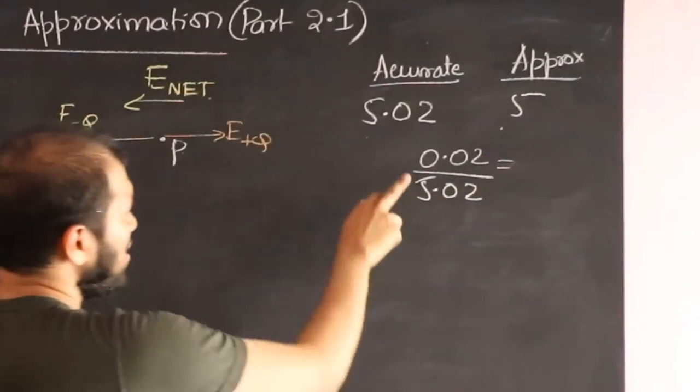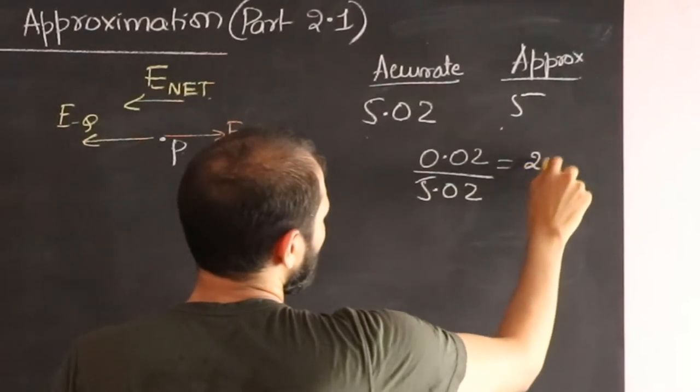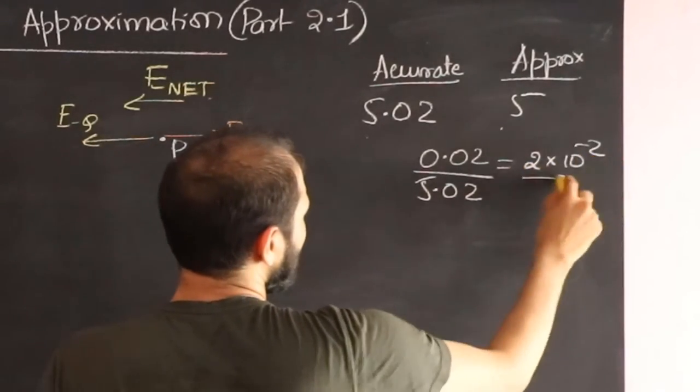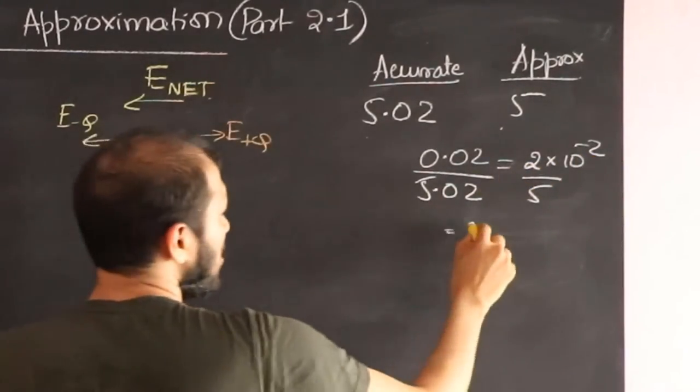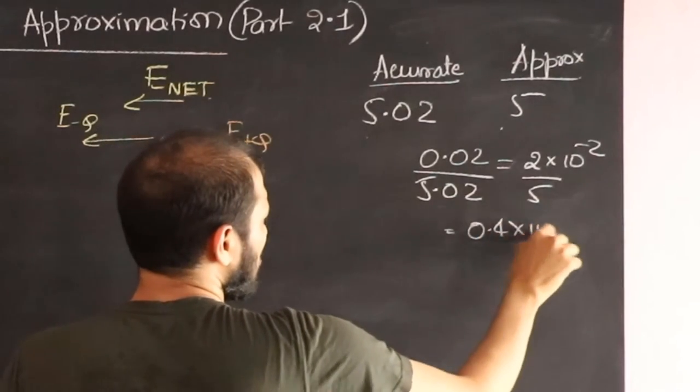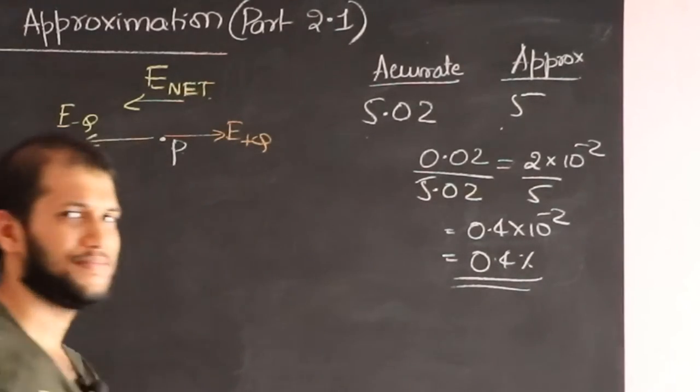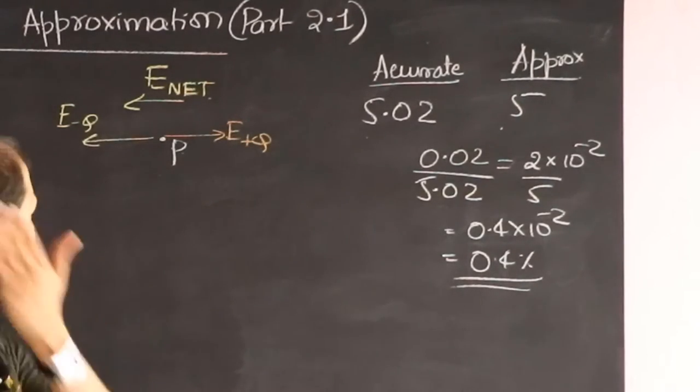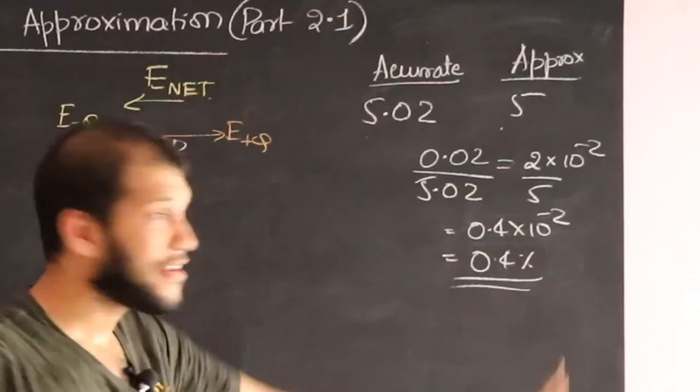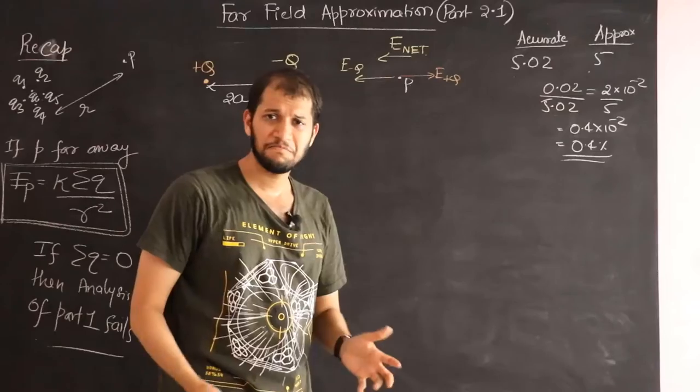And if you calculate that, it's roughly 2 times 10 to the power minus 2, divide by roughly 5. That's 0.4 times 10 to the power minus 2. And that error is 0.4%. That's a very, very tiny error. So we can live with that error. That's not a problem.